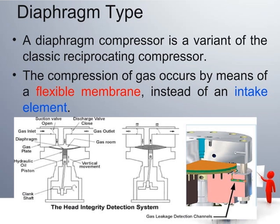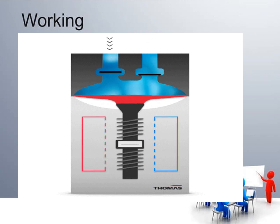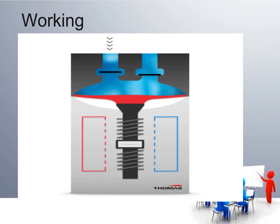The next type is the diaphragm compressor. The diaphragm type compressor is a variant of the classic reciprocating compressor where compression of gas occurs by means of a flexible membrane instead of an intake piston element. In the diagram, the blue color shows the water side and red shows the gas or heat side, with visible inlet and outlet ports.